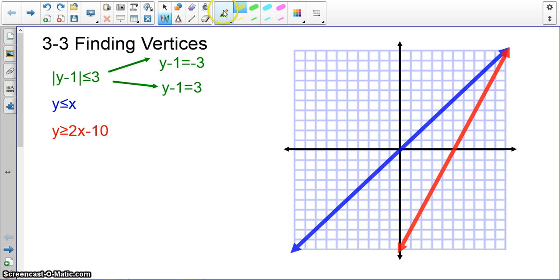So you get y minus one is three, the bottom one here, and y minus one is negative three. So of course we just do a little bit of algebra. You add one to both sides, and you get y, add one to both sides, you get negative three plus one, so you get y equals negative two. And you get y equals, add one to both sides, and you get y equals four.